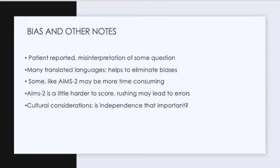Some biases and other notes: overall, they really made an effort to eliminate a lot of biases, as evidenced by the many languages they're translated into. They are patient-reported, however, so there could be misinterpretation of some questions. Some, like the AIMS-2, may be more time consuming. Something to note is that the AIMS-2 is a little bit harder to score, so if the therapist or clinician was rushing or doing it quickly at the end of the day, it may lead to errors in scoring.